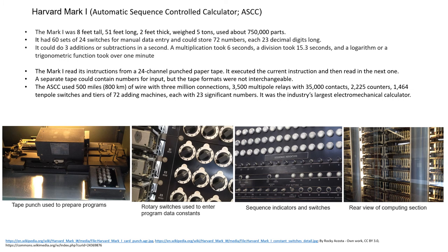Mark I was built with 750,000 parts. It could do three additions or subtractions per second, a multiplication in six seconds, a division in 15.3 seconds, and a logarithmic or trigonometric function in over a minute. Mark I read its instructions from a 24-channel punched paper tape and could execute a current instruction while reading the next one. A separate tape could contain numbers for input, but the tape formats were not interchangeable. The machine used 500 miles or 800 km of wire with 3 million connections, 3,500 multipole relays with 35,000 contacts, 2,225 counters, 1,464 ten-pole switches, and tiers of 72 adding machines each with 23 significant digits. It was indeed the industry's largest electro-mechanical calculator.